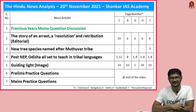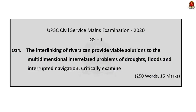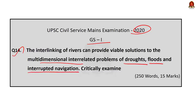Let us start today's discussion with that. This is the first question we will be discussing today. This question appeared in the 2020 mains GS1 paper. The question is: 'The interlinking of rivers can provide a viable solution to the multi-dimensional interrelated problems of droughts, floods and interrupted navigation. Critically examine.' Here the keyword is 'critically examine.'